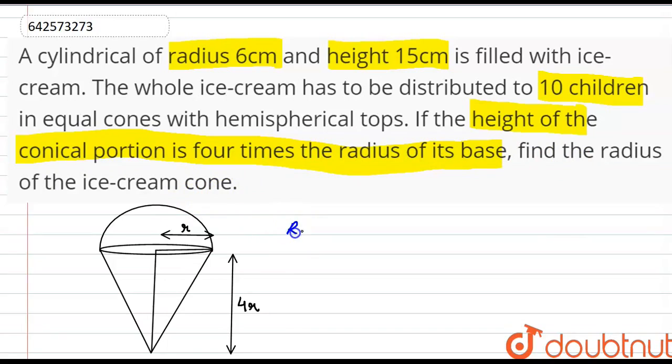So we are given that the radius of cylinder is 6 cm and height of cylinder is 15 cm.